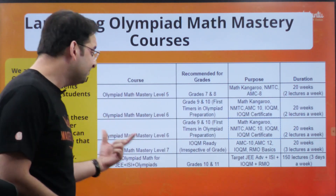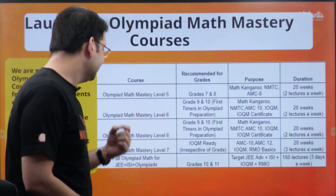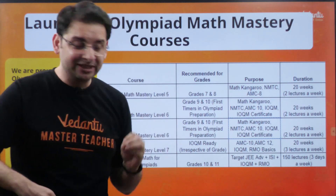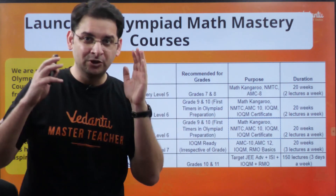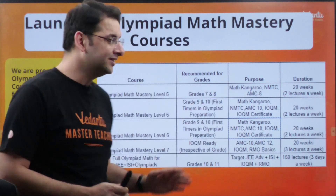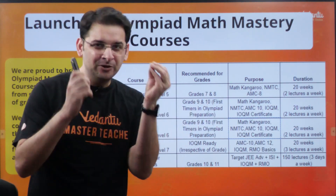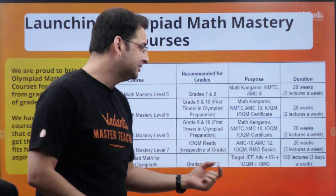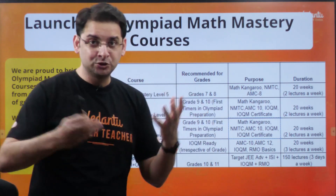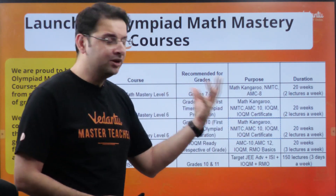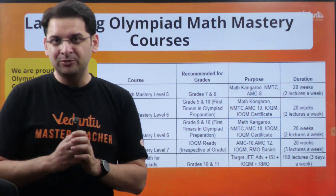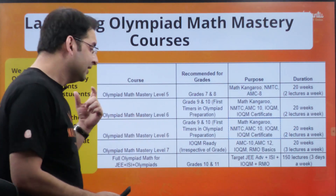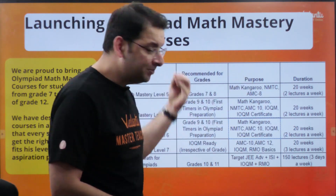Olympiad Math Mastery Level 7 is IOQM-ready, irrespective of what grade you are in. It is also going to help you crack AMC 10 or AMC 12 if you choose to give AMC 12 in 9th or 10th. It covers IOQM and the basics of RMO as well. This course is 20 weeks with three lectures a week.